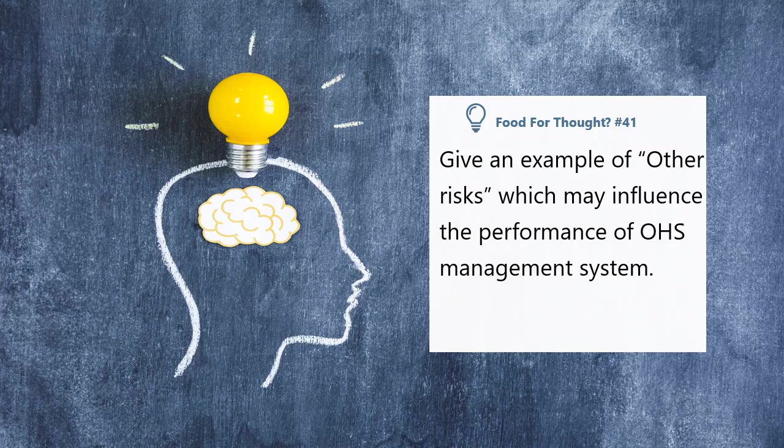Give an example of other risks which may influence the performance of the OHS management system. Pause this slide and think of the answer before I explain. Other risks apart from OHS risks include: organization restructuring, workload addition, regulatory changes to OHS requirements, business competition, or communication breakdown, etc.